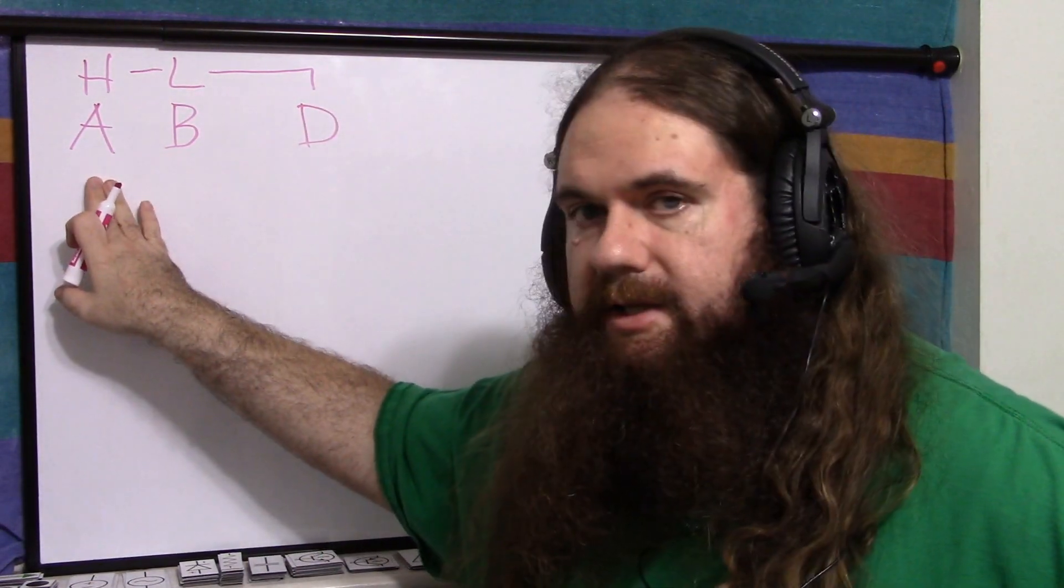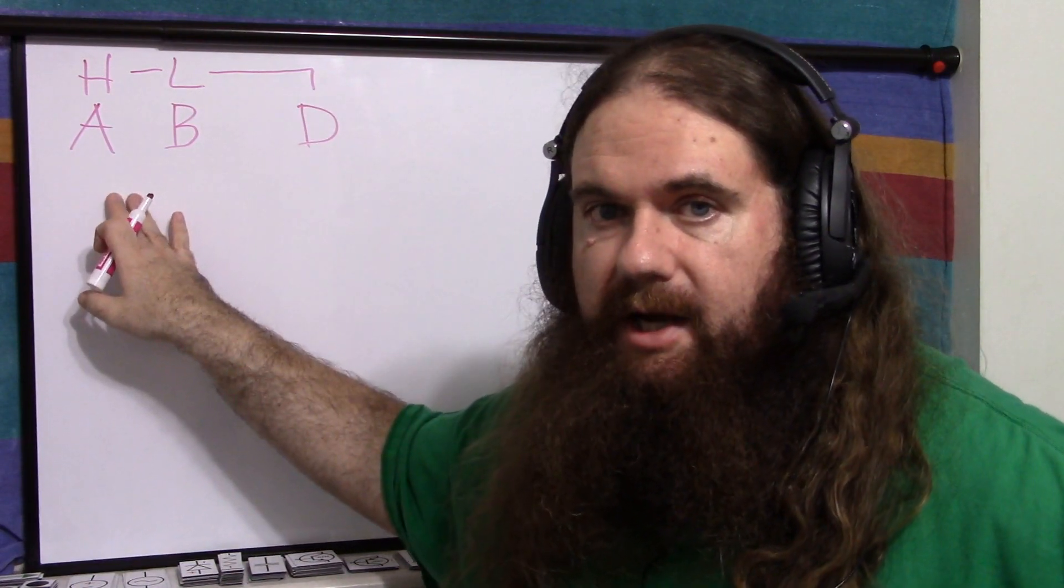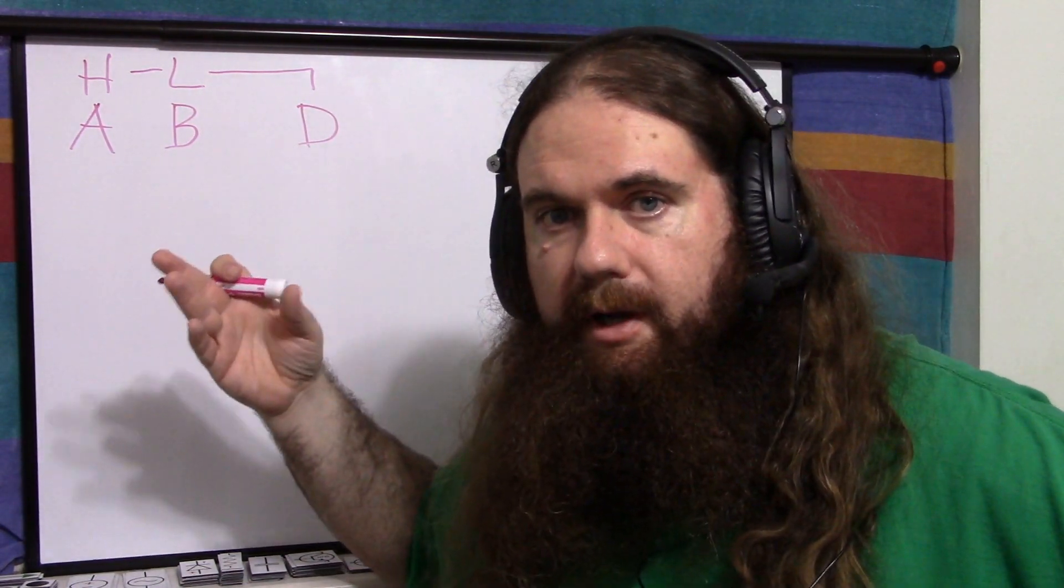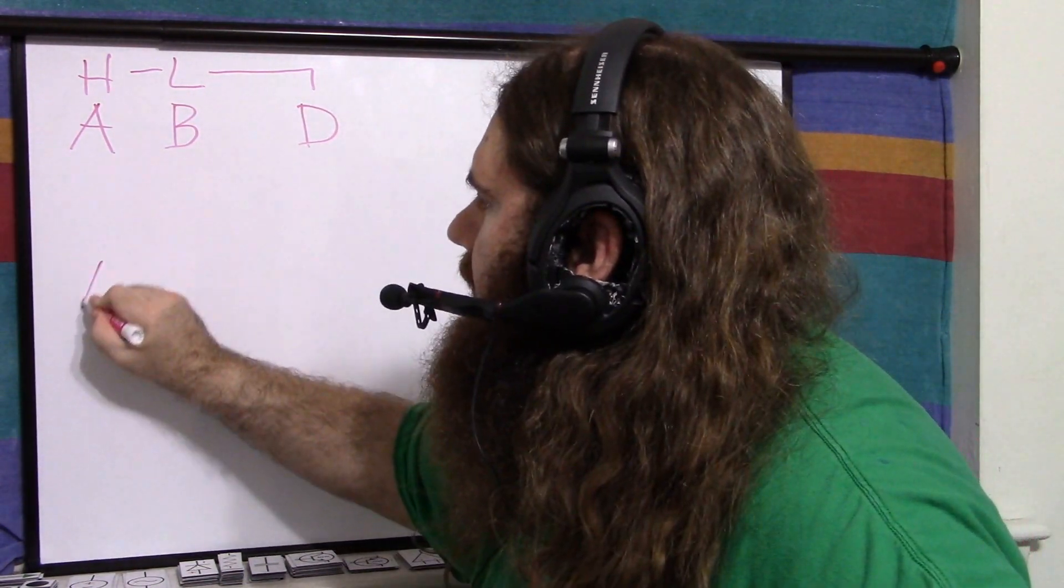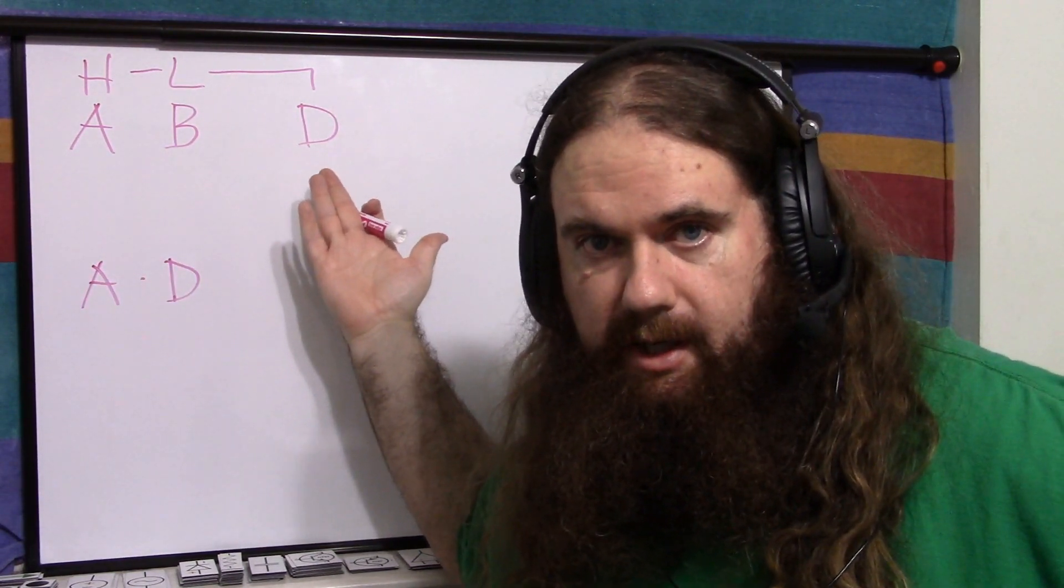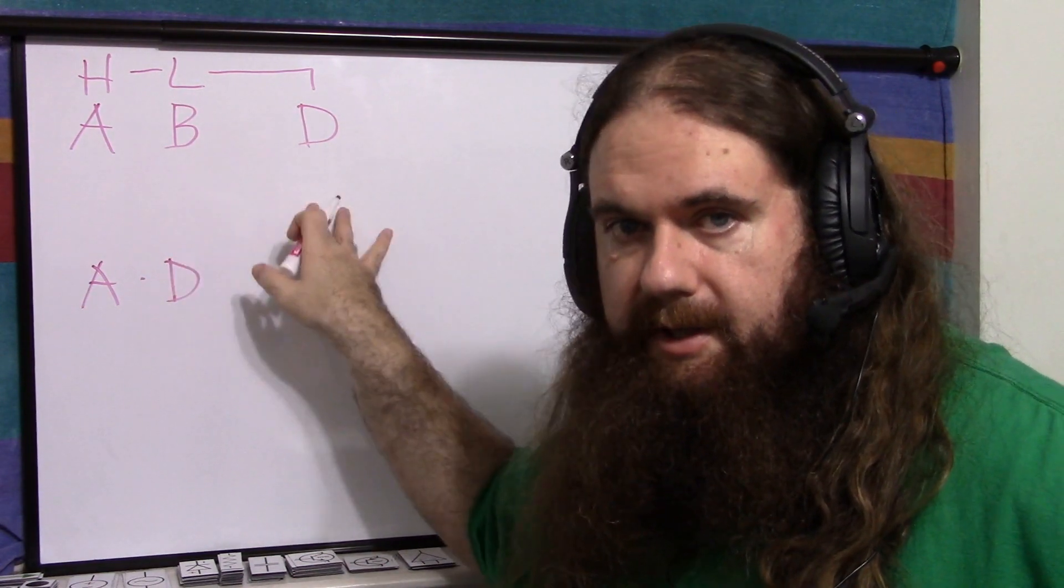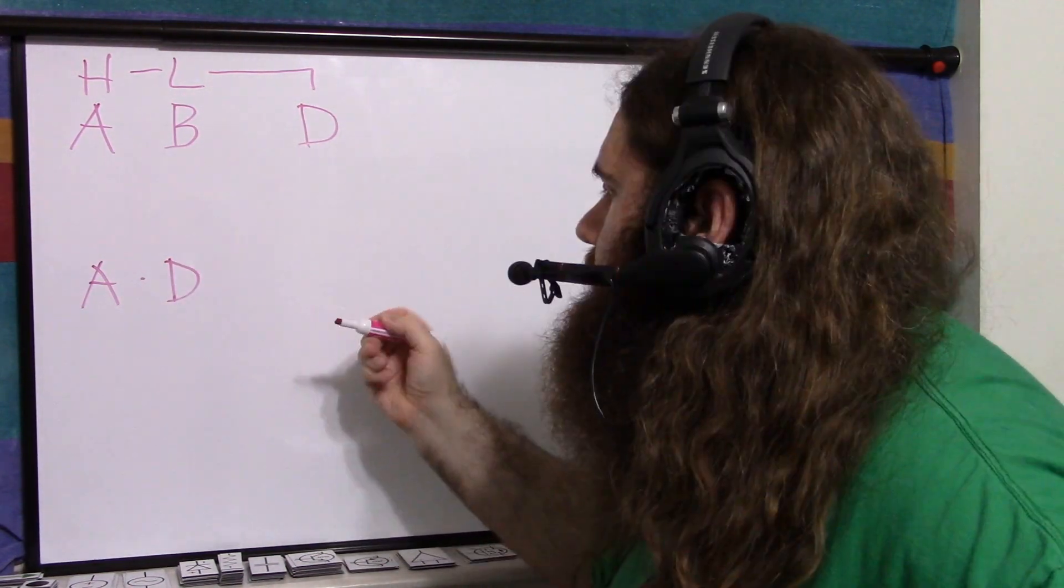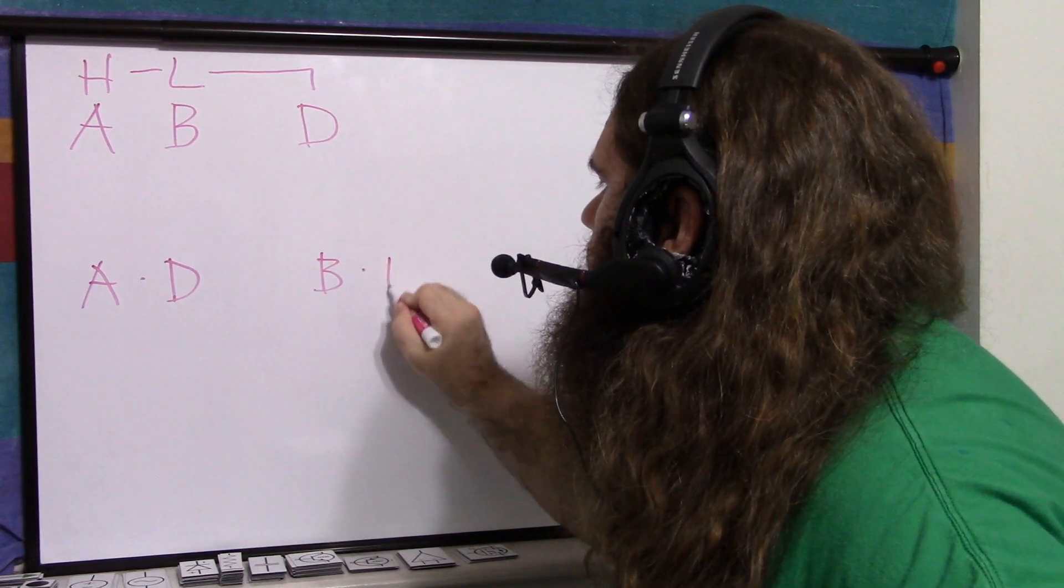If D is high, then we want to select A. So we could say if D is high and A is high, the output should be high, otherwise low. So we could say A and D. And if D is low, in other words, NOT D is high and B is high, then the output should be high, otherwise low. So we have B and NOT D.